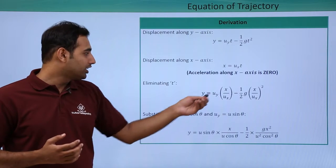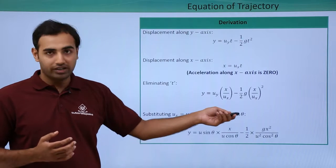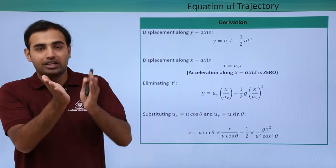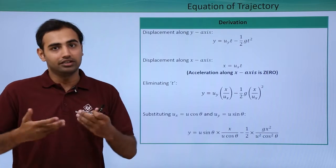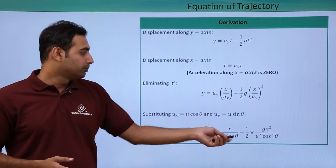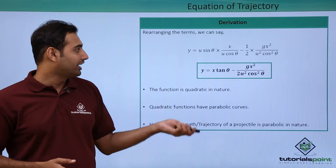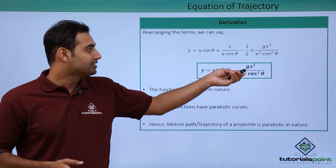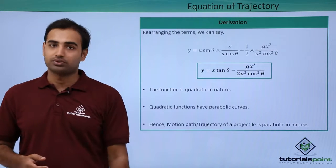And now I will put the value of ux as u cos theta and uy as u sin theta because I know the components of u is u cos theta and u sin theta along horizontal and vertical respectively. So once we do that and we put all the values into the equation, we simply have to simplify it and the final expression we obtain is y is equal to x tan theta minus gx square upon 2u square cos square theta.